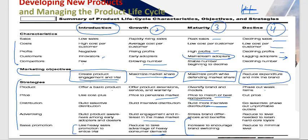In the decline phase, the strategy is to phase out weak items, price to retain the remaining customers, advertise at a minimum level, and keep sales promotion at a minimum level. The objective is to reduce expenditure and sustain the product. This summarizes all the product life cycle characteristics, objectives, and strategies.